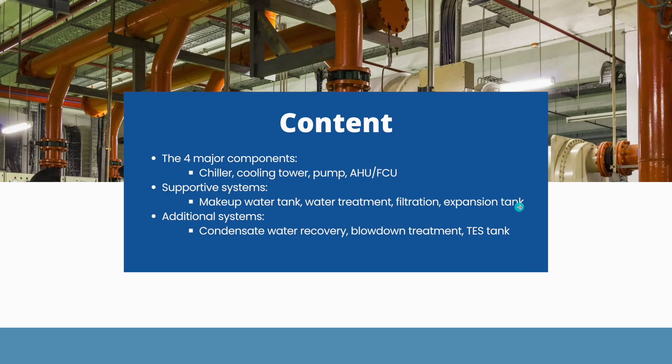For this working principle of chill water system video, we have 3 things to cover. The first is the 4 major components of chill water system — mainly the chiller, cooling tower, pump, AHU and FCU. Second is the supportive system, which includes the make-up water tank, water treatment system, filtration system and expansion tank. Lastly, we will cover additional systems that can be added, including the condensate water recovery system, blow down treatment, and thermal energy storage tank.